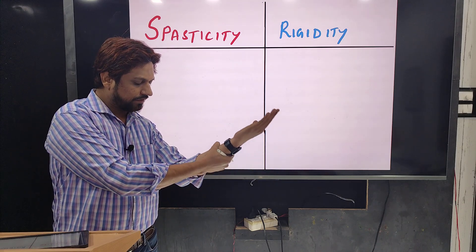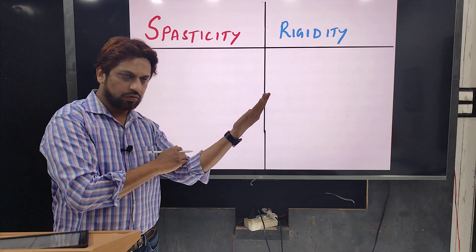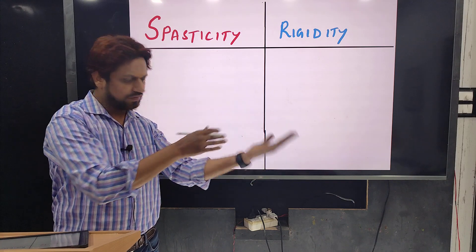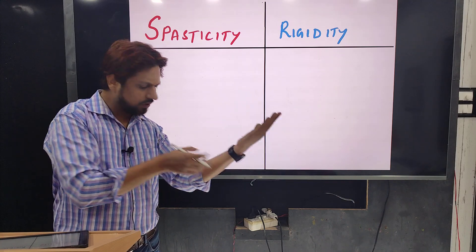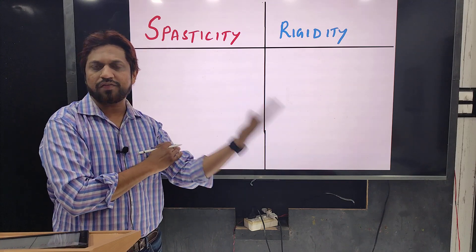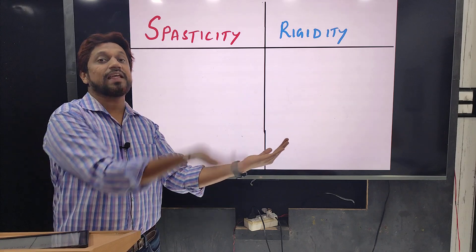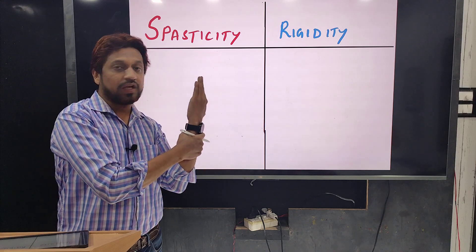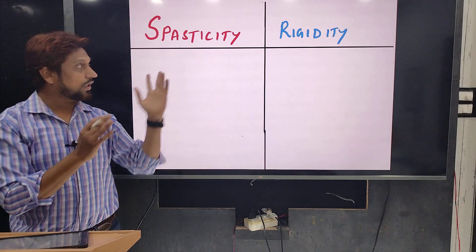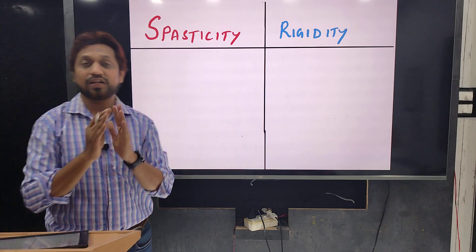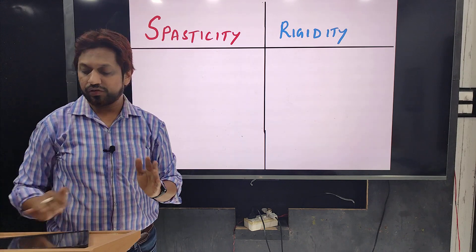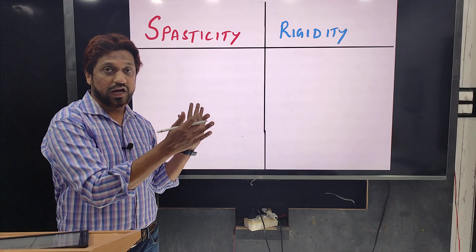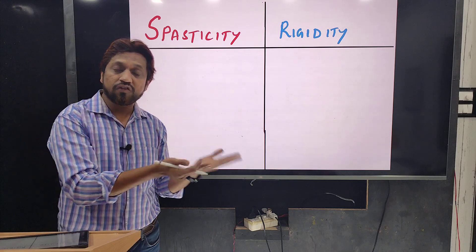If I am passively flexing this elbow joint, I will feel some resistance — it is not smooth and I cannot do it very easily. Some resistance is offered because of the muscle tone present in the muscle. When this tone is increased, that is hypertonia, I will find it even more difficult to flex. In both spasticity and rigidity, there is an increase in muscle tone or hypertonia, but the causes and clinical presentations are different.